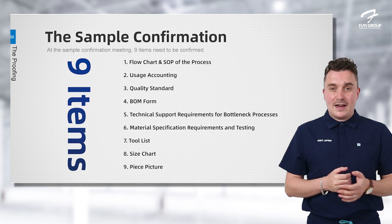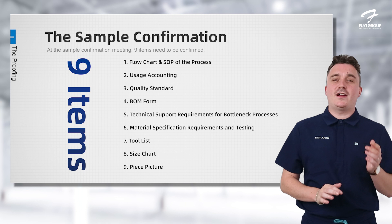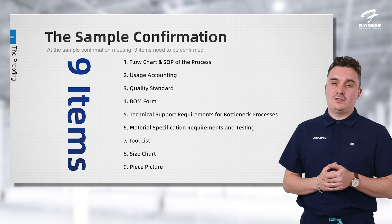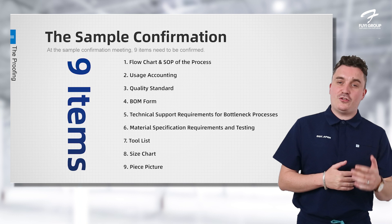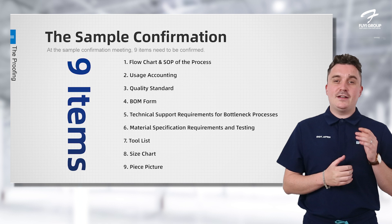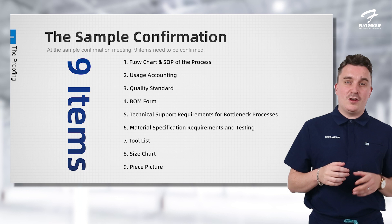The fifth step is our technical support requirements — going through all the support we need to make these products. After that, we review material requirements, identifying what materials and extra materials are needed. Finally, we complete our tool list, size chart, and piece picture. This is all an internal process, giving you a quick rundown of how we do things after the sample has been confirmed between you and us.